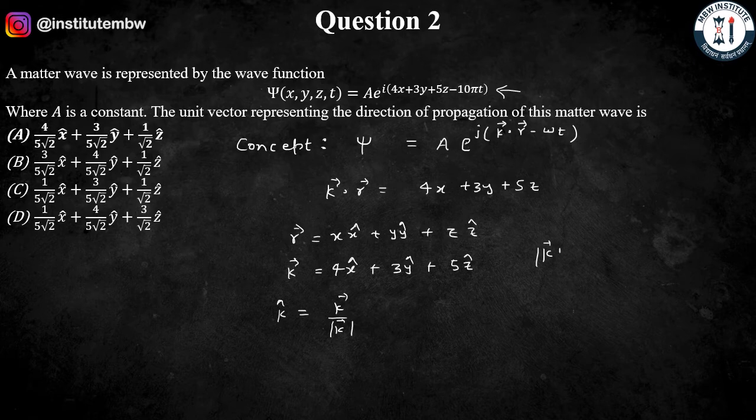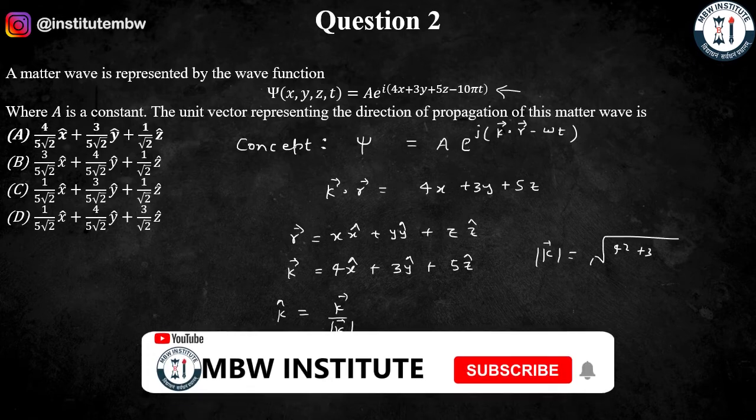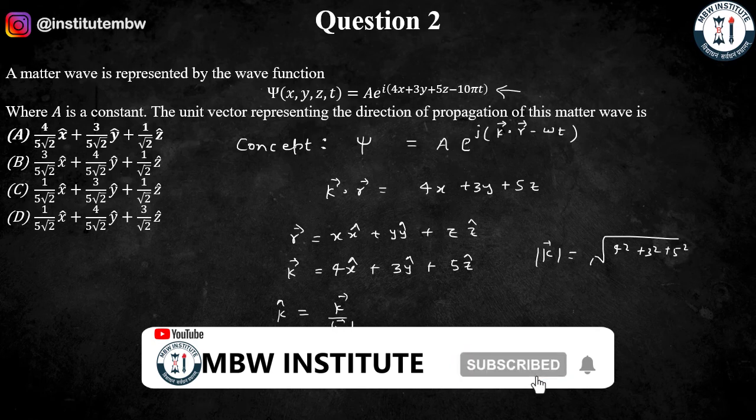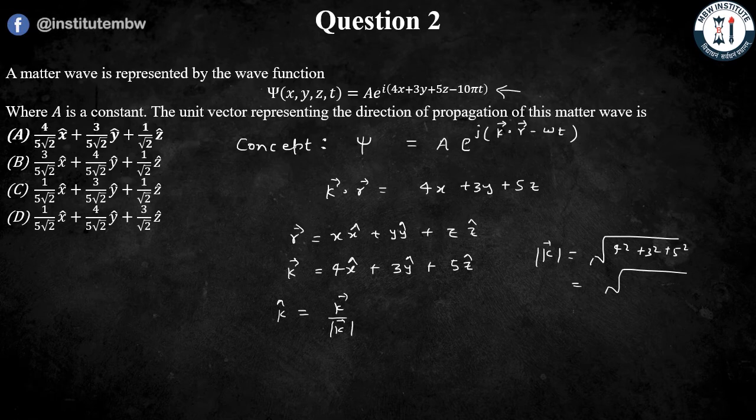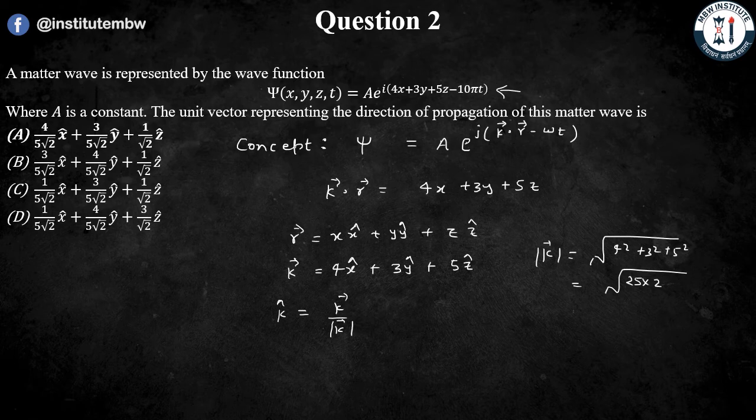For |k⃗|, that will be √(4² + 3² + 5²). So, it is 16 + 9 + 25 that will be 50. So, it will be 5√2.